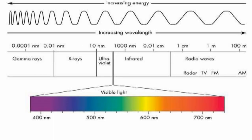We can study about electromagnetic waves in detail in Chapter 8. There are seven types of electromagnetic waves. Among them, our human eye can detect only visible light.